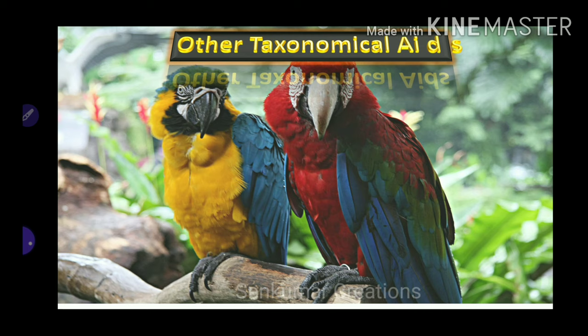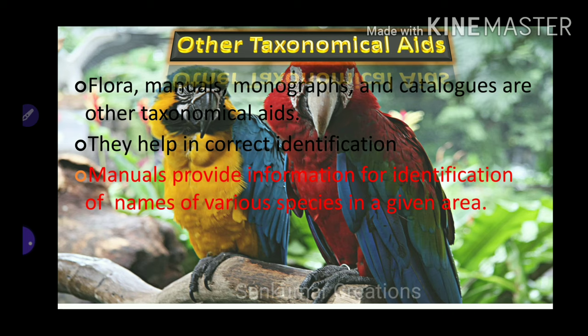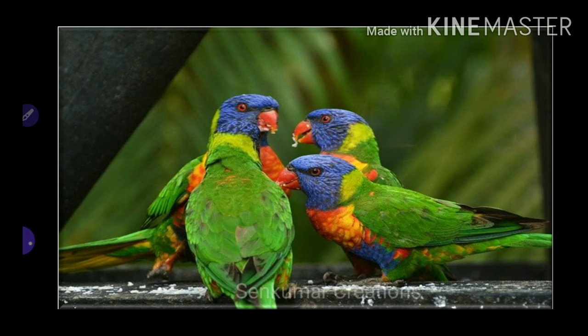Other taxonomical aids: flora, manuals, monographs, and catalogues are other taxonomical aids. They help in correct identification. Manuals provide information for identification of names of various species in a given area. Monographs contain information on any particular taxon.